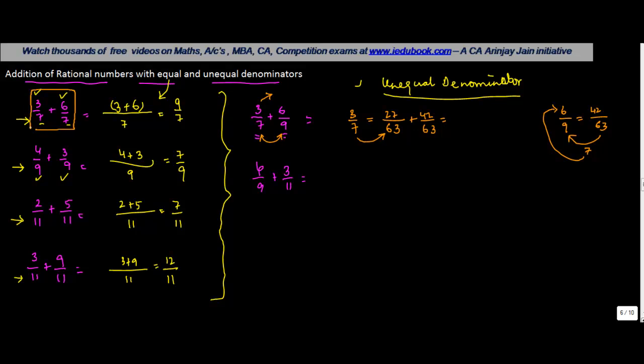Now we have reached a situation which was something like this: we have a common denominator of 63. So how do we get the solution? The denominator remains the common denominator, but the numerator becomes the sum of these two. 27 + 42 = 69/63.